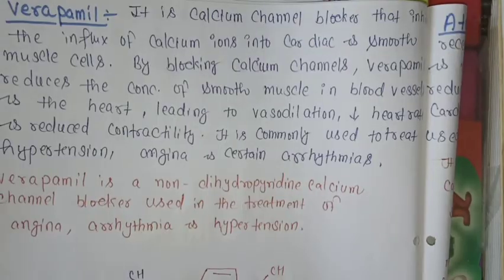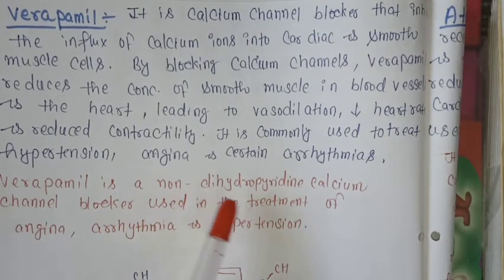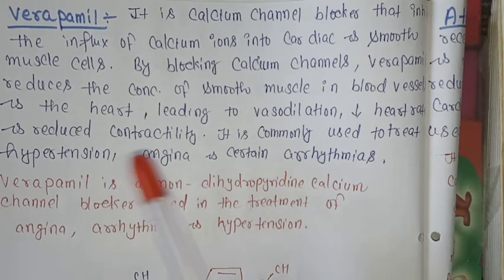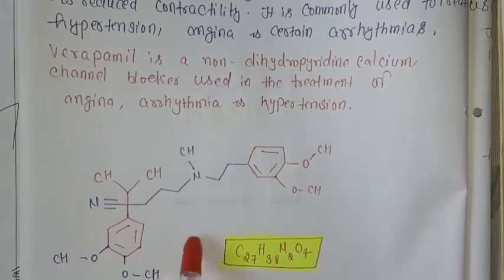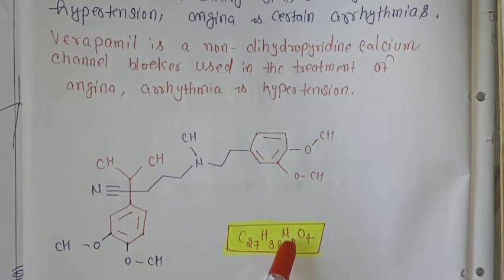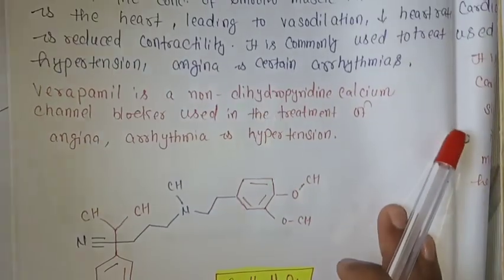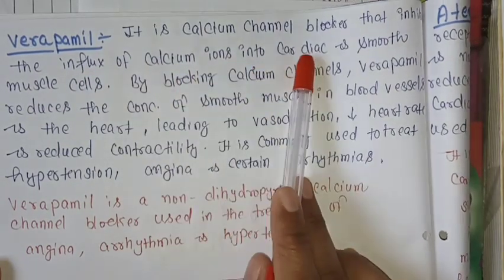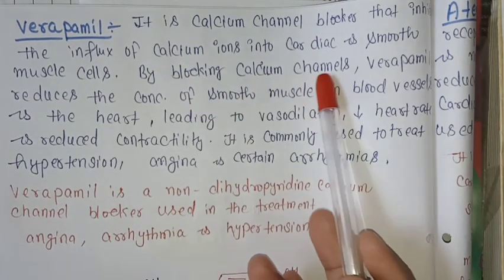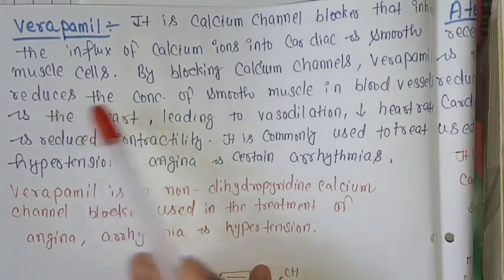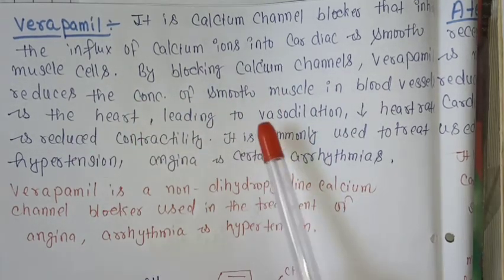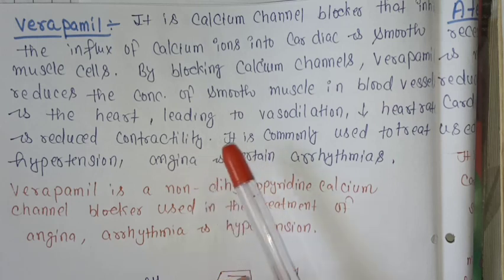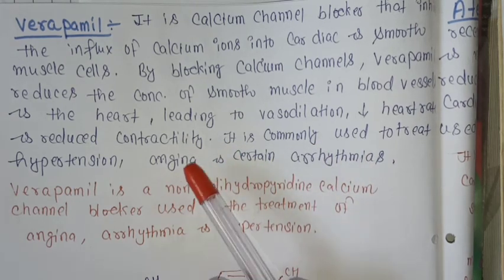Next is verapamil. It is a non-dihydropyridine calcium channel blocker used in the treatment of angina and hypertension. Its molecular formula is C27H38N2O4. It is a calcium channel blocker that inhibits the influx of calcium ions into cardiac and smooth muscle cells. By blocking calcium channels, verapamil reduces smooth muscle contraction in blood vessels and the heart, leading to vasodilation, decreased heart rate, and reduced contractility. It is commonly used to treat hypertension, angina, and certain arrhythmias.